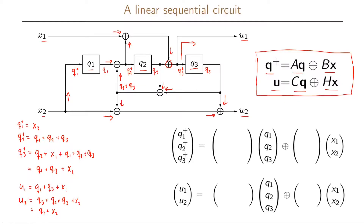Now let us write these in matrix form. For q1+, it depends only on x2, so we write zero one in the input matrix row. For q2+, it equals q1 + q2 + q3, so we have ones in that row of the state matrix and it does not depend on the input. For q3+, it equals q1 + q3 + x1, giving one zero one in the state matrix row and one zero in the input matrix row.